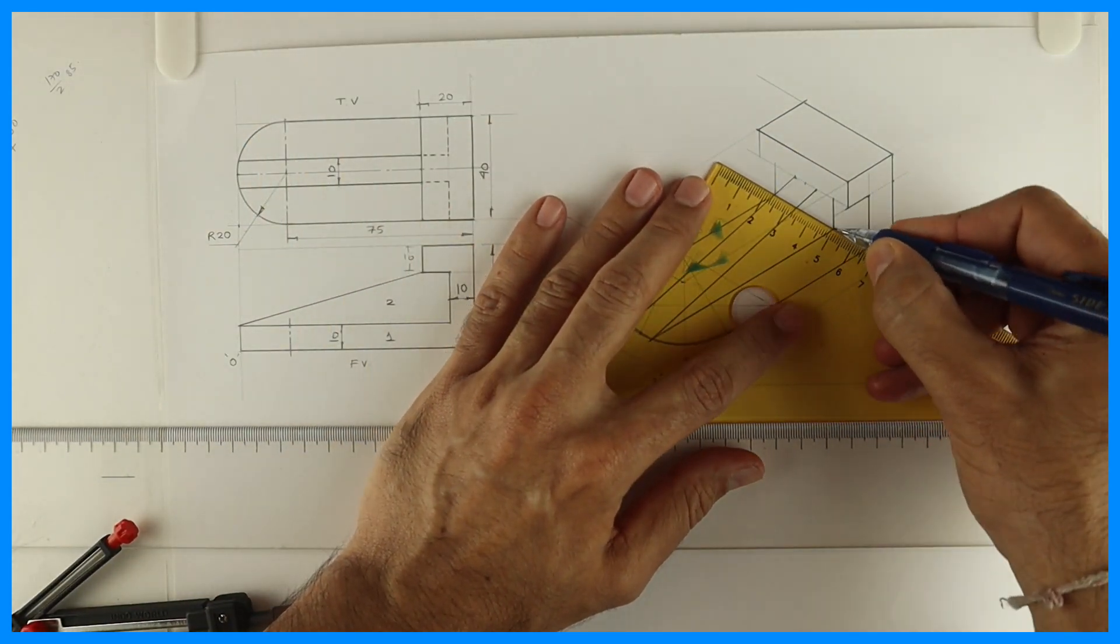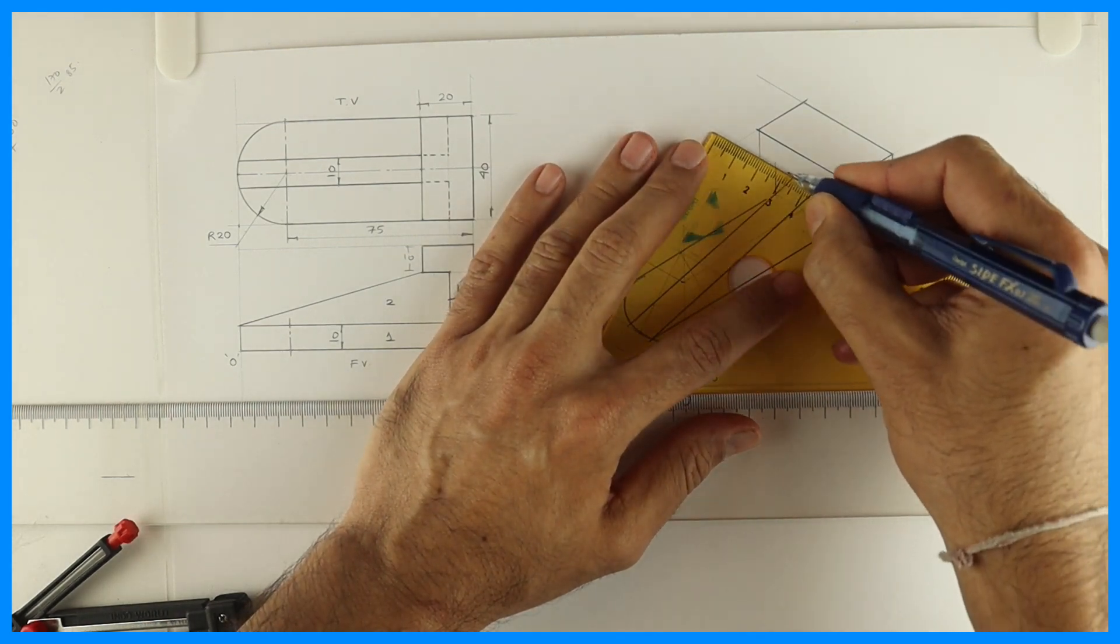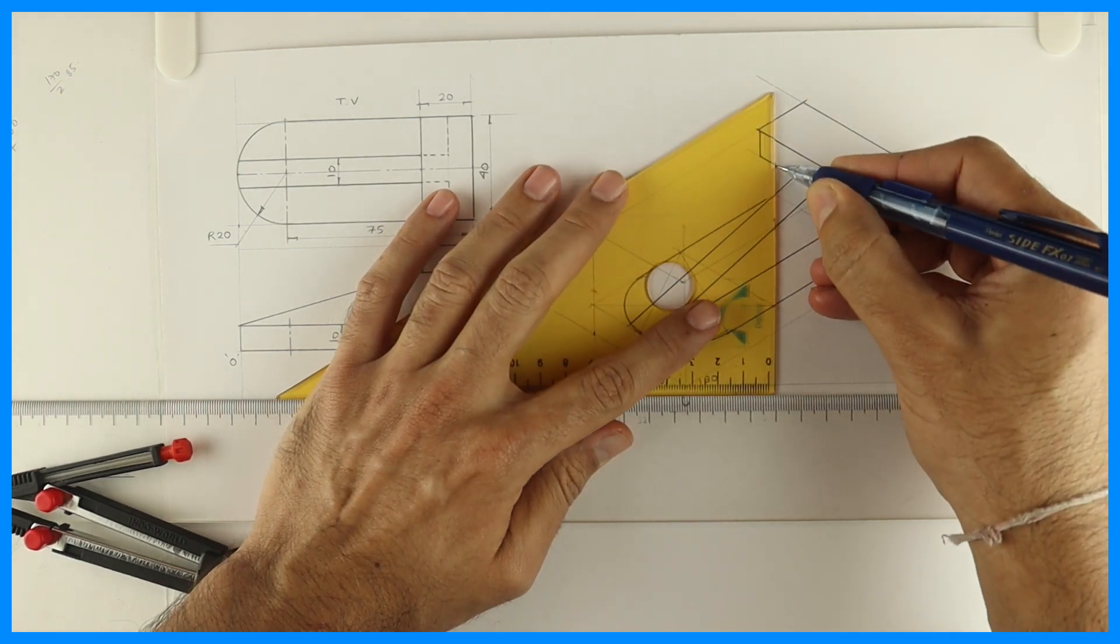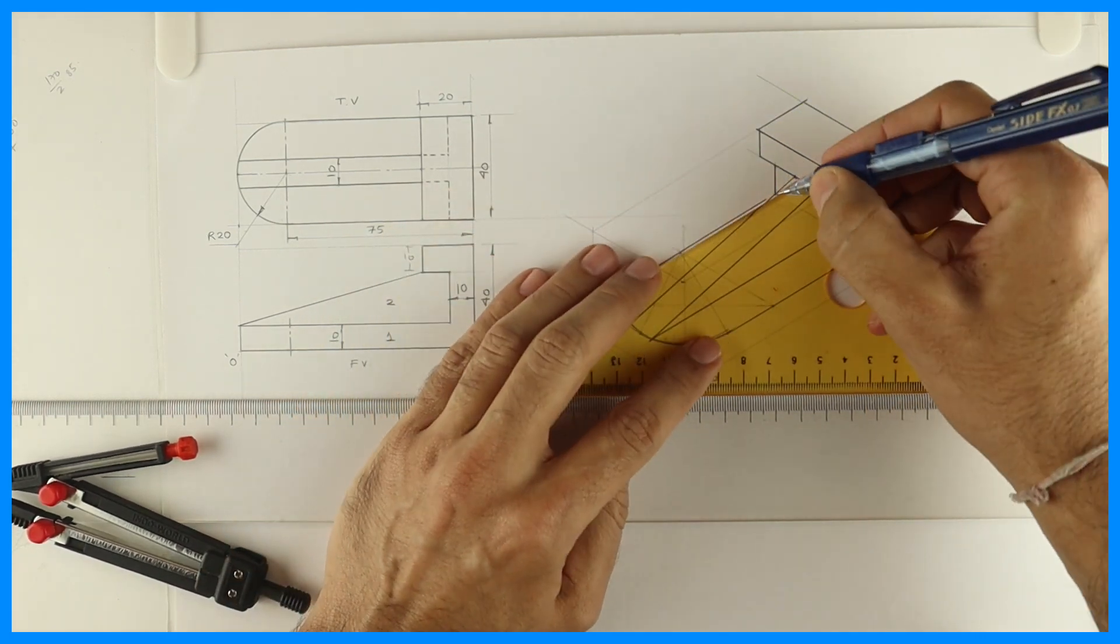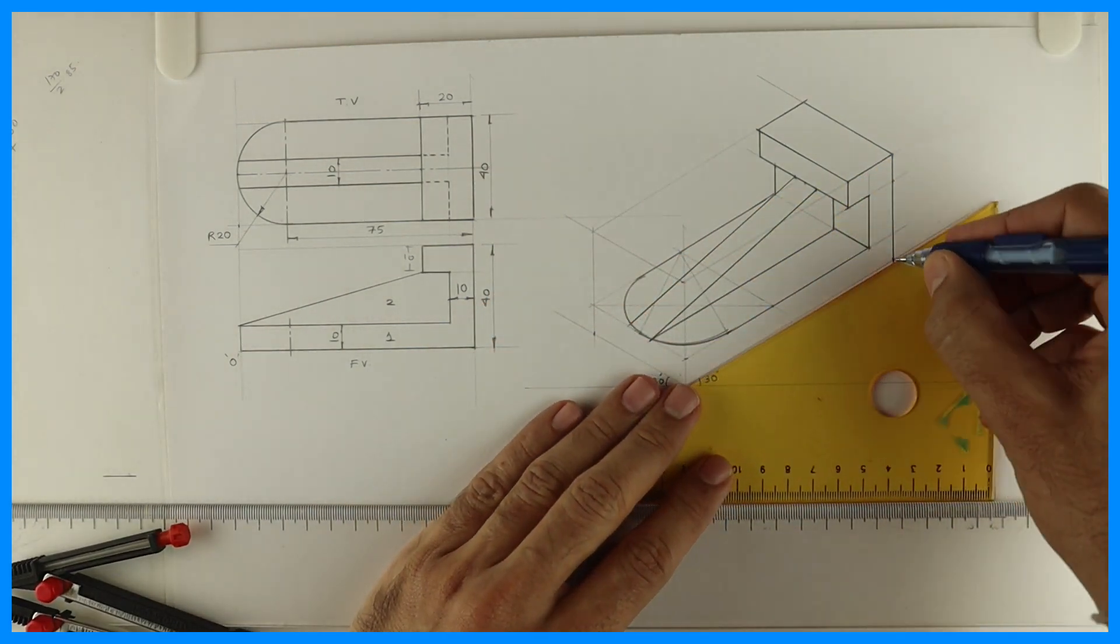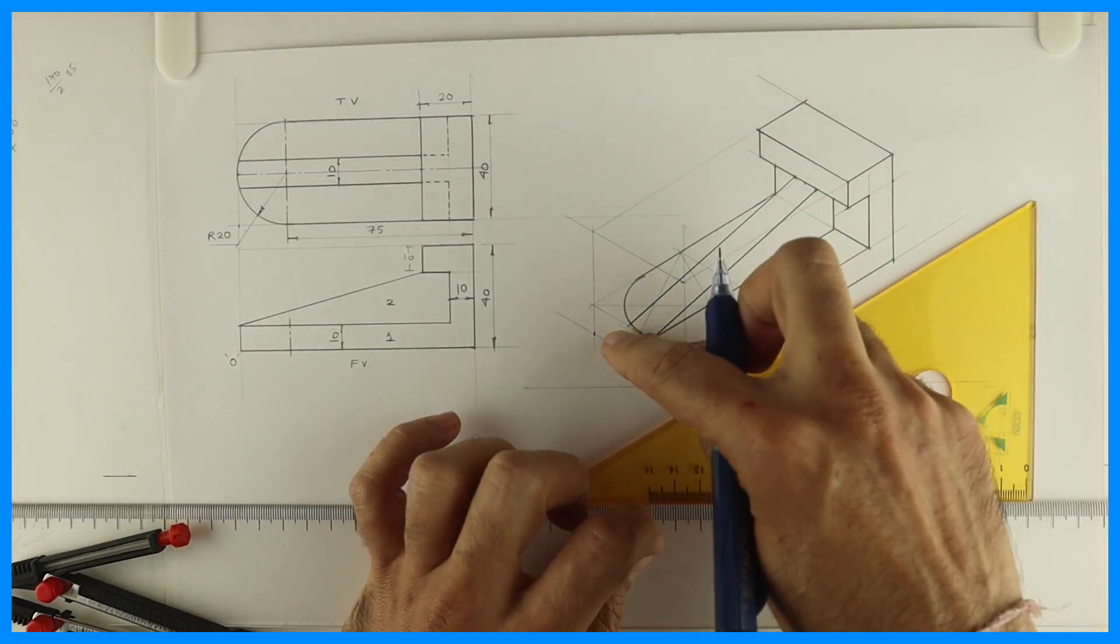So we are done with part 2. Part 1 is also done, only the height is remaining. If you see the 10mm height, see this part.